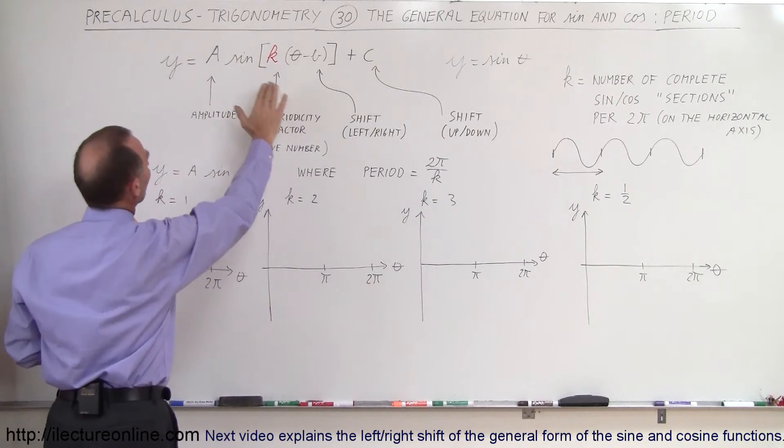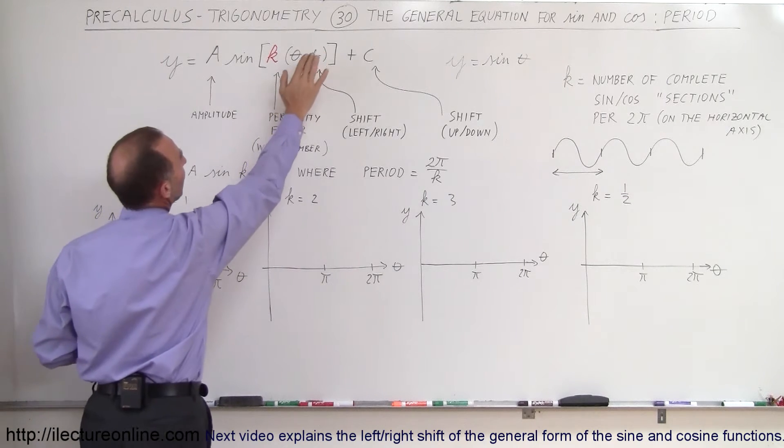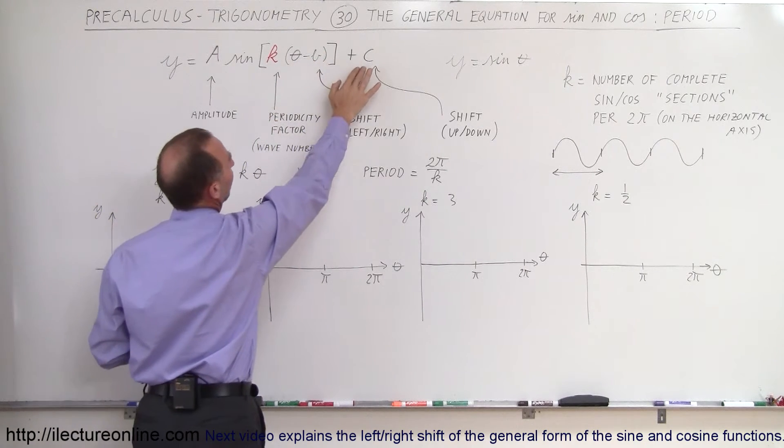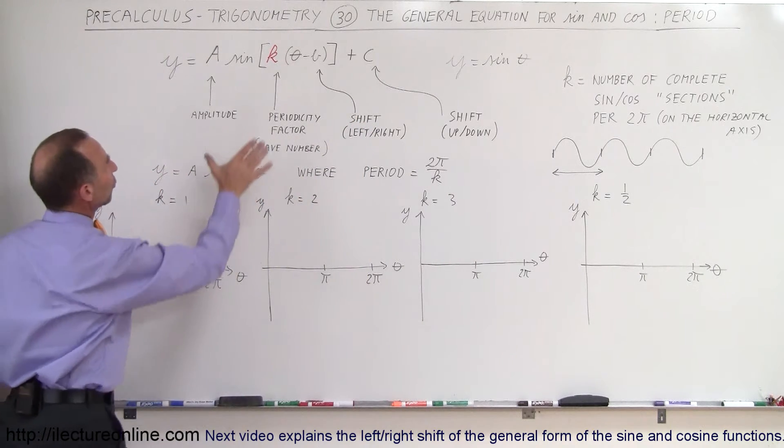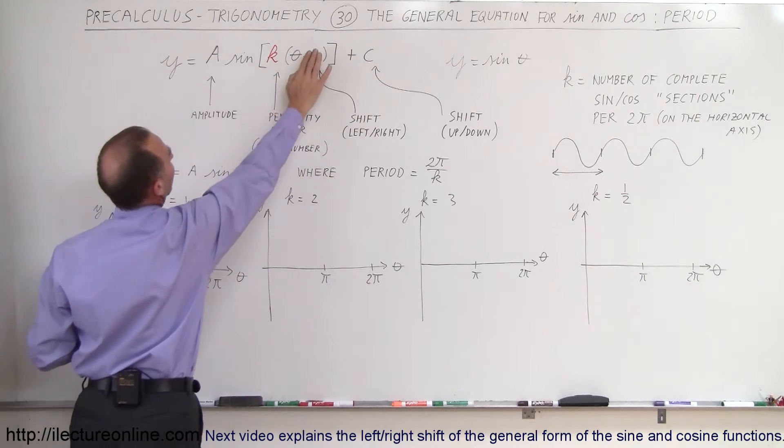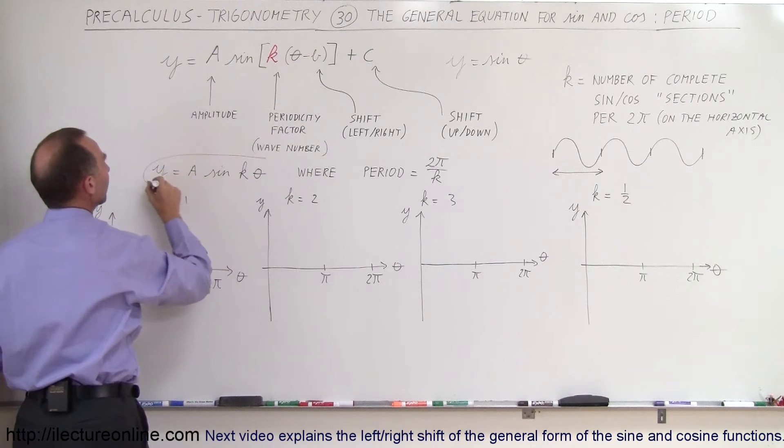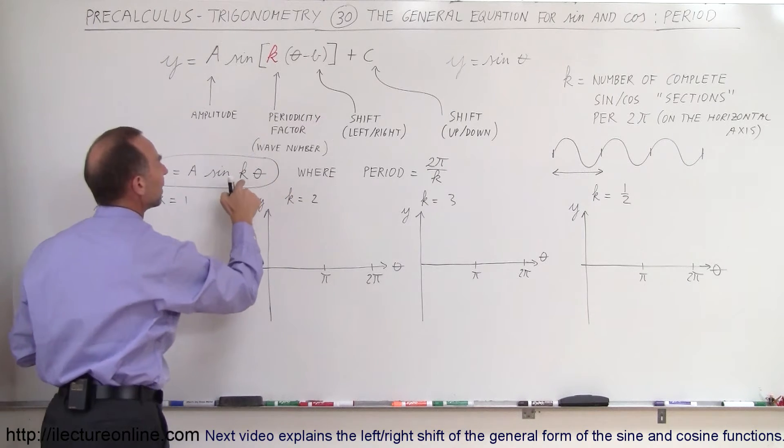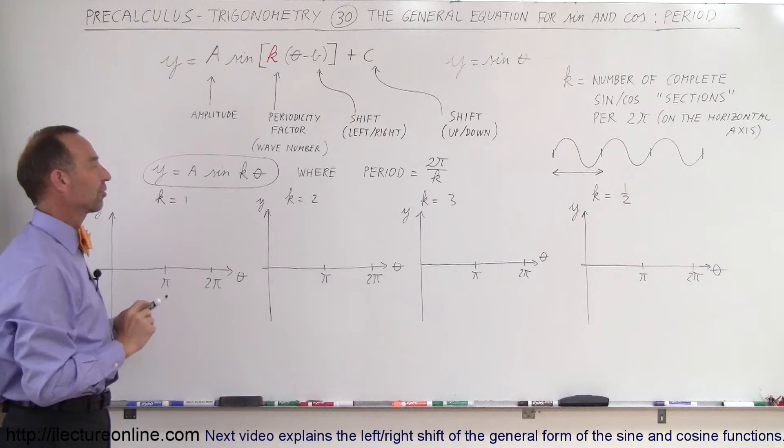We're ignoring everything else. We have the amplitude; we'll just call the amplitude A. We're ignoring the shift to the left or right, ignoring the shift up or down. We've taken B to be 0 and C to be 0, so we can call the equation this: y is equal to A times the sine of kθ. And we're going to see how the sine function changes with different values for k.